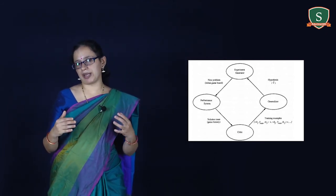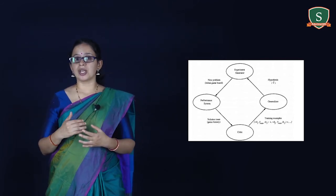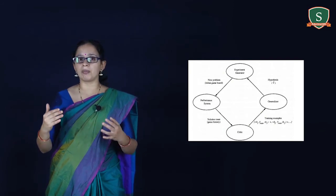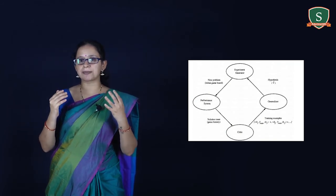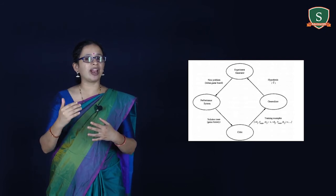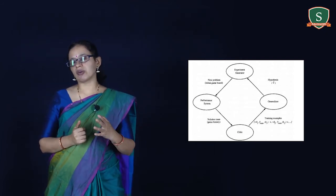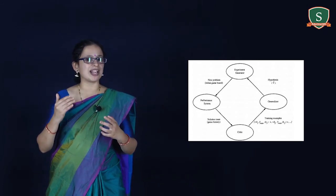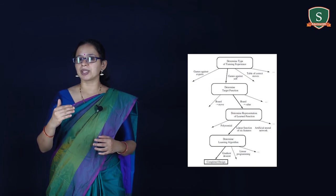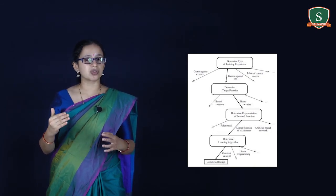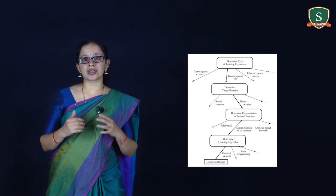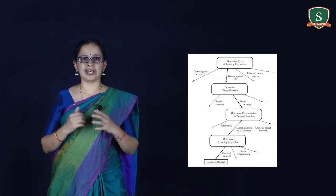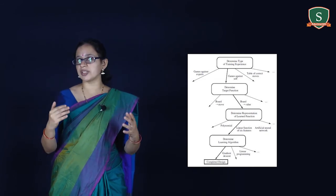The fourth module is the experiment generator, which takes the current hypothesis as input and outputs a new problem for the performance system to explore. Its role is to pick a new practice problem that will maximize the learning rate of the overall system. In the checkers program, the performance system takes a board state and generates a solution; then the critic tests the new state and generates more training examples; the generalizer generalizes; and the experiment generator produces a new test.